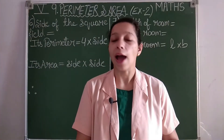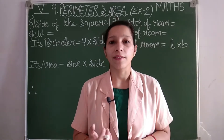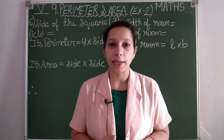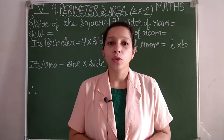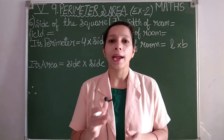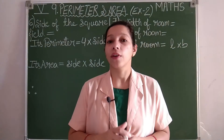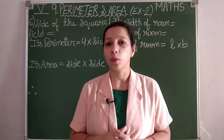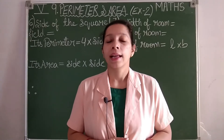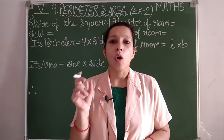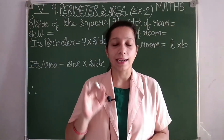Good morning children, hope you all are fit and fine. In the last video we covered chapter number nine, perimeter and area, exercise number two, where we discussed area. The surface occupied by an object is its area. Area of rectangle equals length into breadth, and area of square equals side into side. Area is always written in square units — square centimeter, square meter, square kilometer.